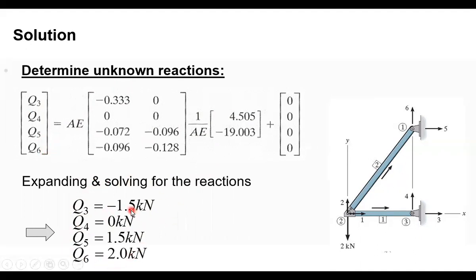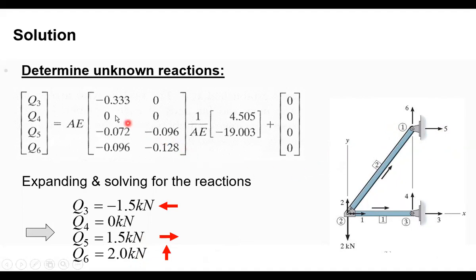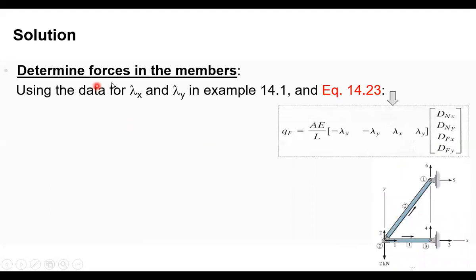Q3 is negative, and since degree of freedom 3 points to the right, a negative reaction means it points to the left. Q4 is zero. Q5 is positive — so it points to the right, same as its degree of freedom direction. Q6 is positive — so it points upward, consistent with its degree of freedom direction.